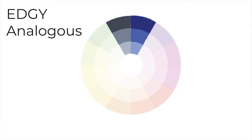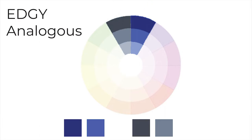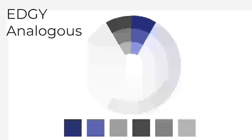Using the analogous color scheme to choose your six colors based on the edgy style aesthetic. The gray and blue color tones are analogous colors to each other, which is why this color scheme works very well with the edgy style aesthetic. You can select your two colors shown here in gray and blue tones, shade it darker by adding different levels of black, or tint it lighter by adding different levels of white to get your six colors. Here is what it looks like.